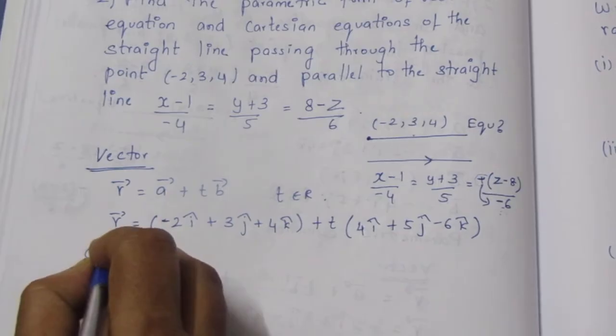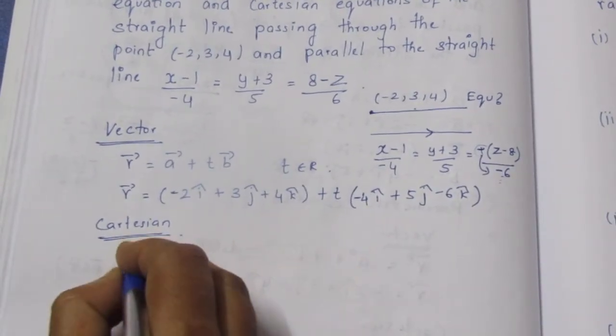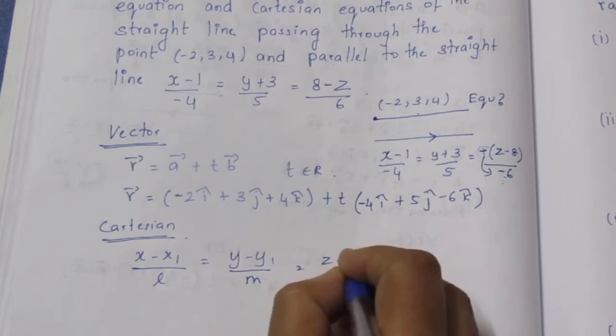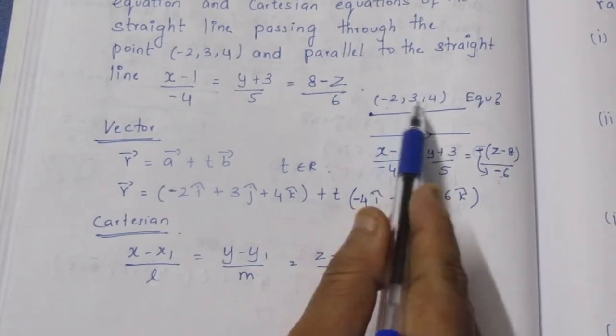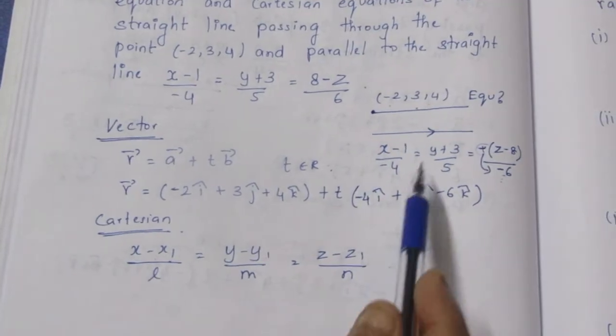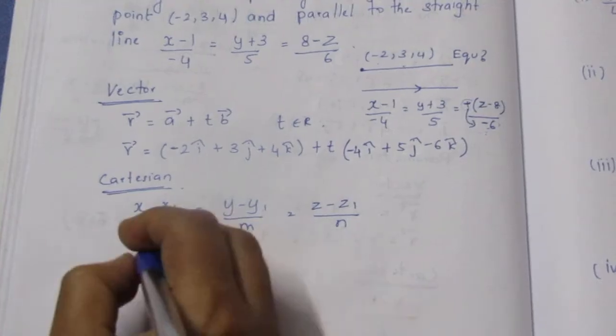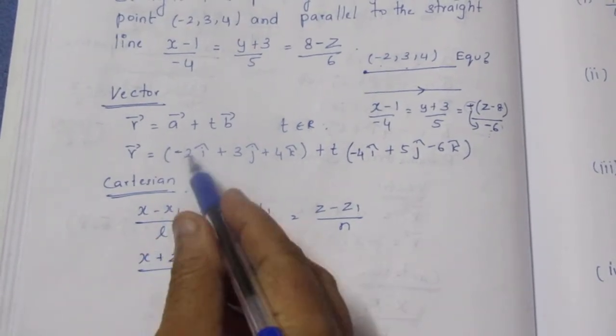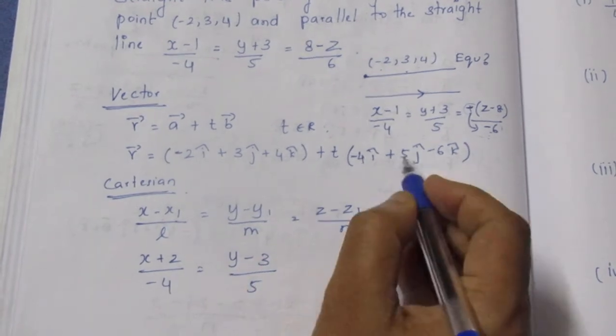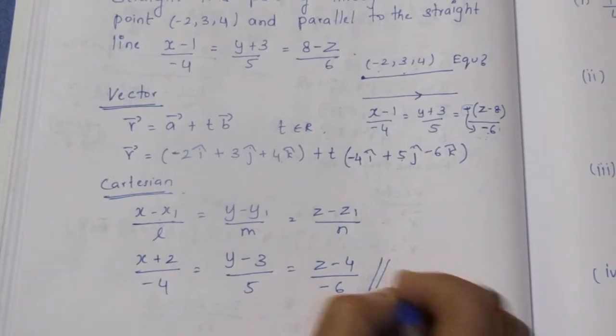Now, Cartesian form equation. Cartesian equation is (x-x1)/l equals (y-y1)/m equals (z-z1)/n. x1, y1, z1 are the points. So (x+2)/(-4) equals (y-3)/5 equals (z-4)/(-6). This is the Cartesian equation.